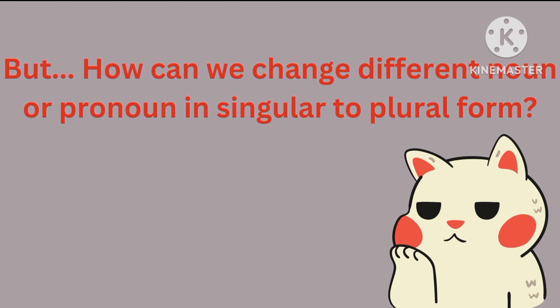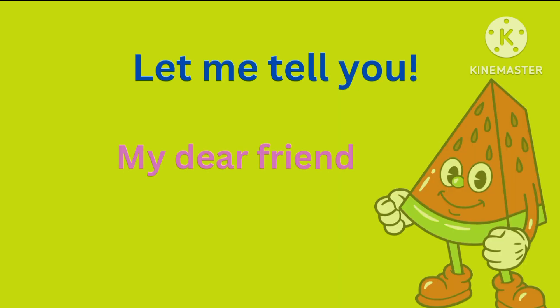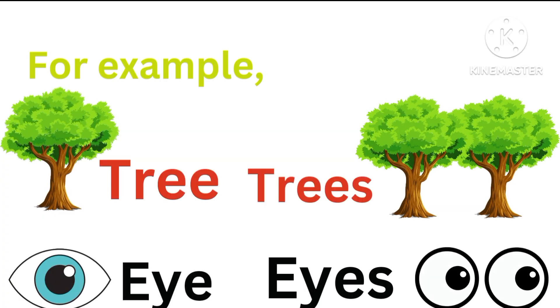But how can we change a noun or pronoun from singular to plural form? Let me tell you. Here is our first rule — Rule A: Most nouns change from singular to plural by adding S to the singular. For example, tree becomes trees, and eye becomes eyes. We add S to the singular to make it a plural noun.